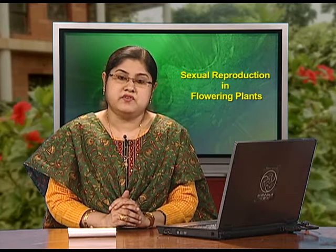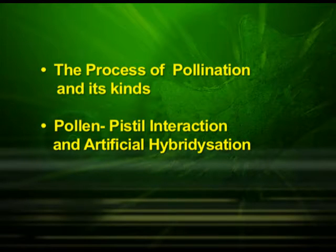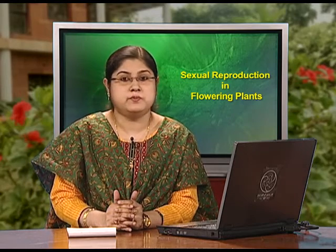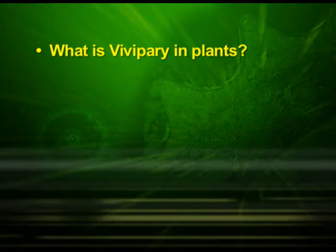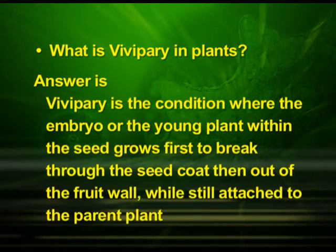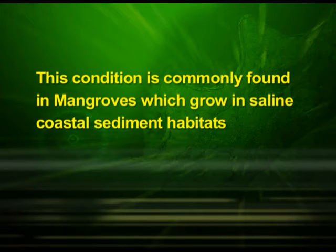In the third part of this chapter, we discussed the process of pollination and its kinds, pollen-pistil interaction and artificial hybridization. We closed the third episode with a point to think about — what is vivipary in plants? The answer is that vivipary is the condition where the embryo or young plant within the seed grows first to break through the seed coat, then out of the fruit wall while still attached to the parent plant. This condition is commonly found in mangroves, which grow in saline coastal sediment habitats.